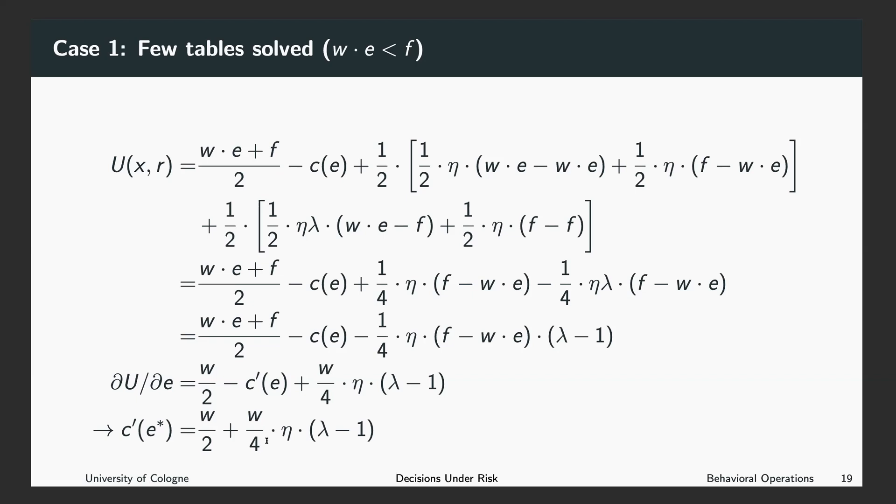This means the stronger the loss aversion, the more effort I want to provide in case that given the current provision of effort, I will get more when receiving the fixed payment than when receiving the piece rate.